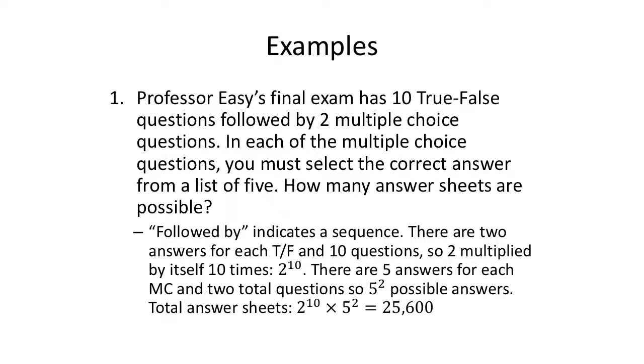So there are two answers for each true and false question, 10 total questions. Two, all right? Two options for each one 10 times. That's 2 to the 10th power. For the multiple choice questions, one correct answer from a list of five. There are five answers for each multiple choice, a total of two questions. So five chances. There are five options for the first question, five options for the second question. That's five squared possible answers.